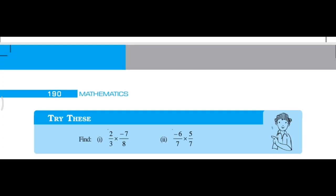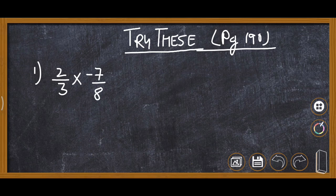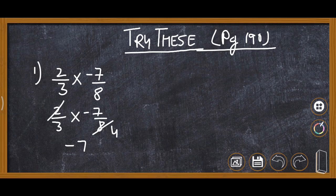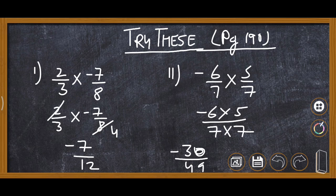On page 190, the Try These involves multiplication. First: 2/3 × -7/8. We can simplify — 2 and 8 can cancel, giving 1 and 4, so the answer is -7/12. Second: -6/7 × 5/7. Multiplying -6 by 5 gives -30, and 7×7 = 49, so the answer is -30/49.